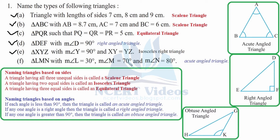Part f: Triangle LMN with measure of angle L equal to 30 degrees, angle M equal to 70 degrees, and angle N equal to 80 degrees. All the angles are less than 90 degrees, therefore it is an acute angled triangle. When each angle is less than 90 degrees, the triangle is called an acute angled triangle. This was the last part of question one.